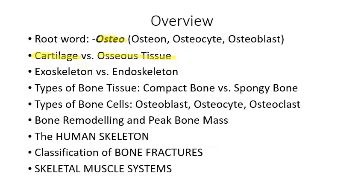On the evolutionary scale, experts believe that cartilage preceded bone. About 500 million years ago, fish in the ocean had cartilage skeletons made entirely of cartilage, not bone. Some of those fish are still around today — sharks, dogfish, and stingrays all have skeletons made of cartilage. Then, a few hundred million years later, fish developed a skeleton made of bone by adding calcium phosphate and calcium hydroxide to cartilage. Those fish are called osteichthians, which also contains the word 'osteo.'